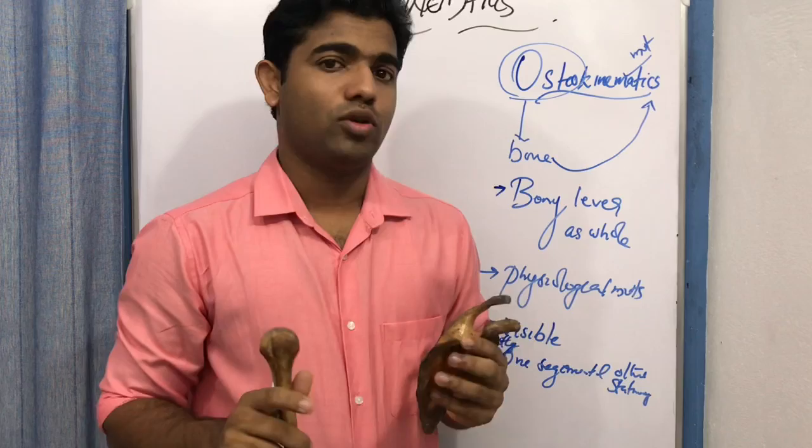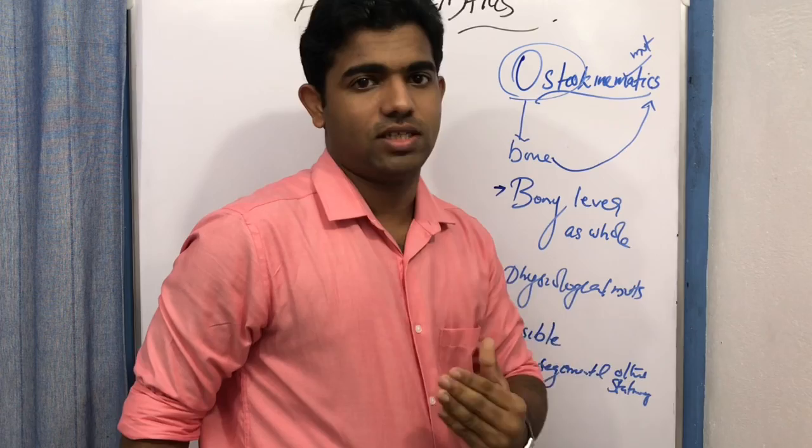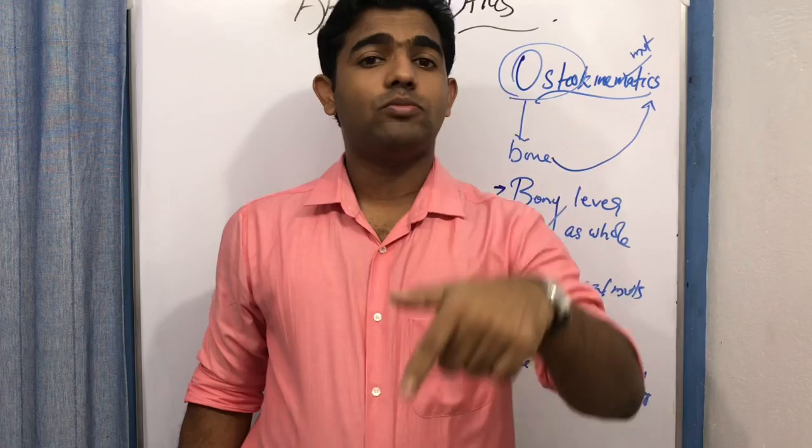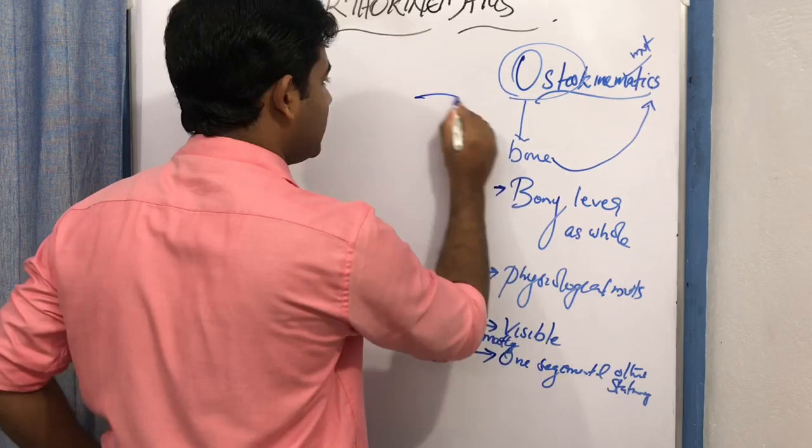In the basics, remember that mostly one segment is fixed. For example, in hip flexion the acetabulum or hip bone is fixed whereas the femur is moving. In weight-bearing knee flexion, the femur is moving and the tibia is fixed. One segment is fixed and the other is moving.